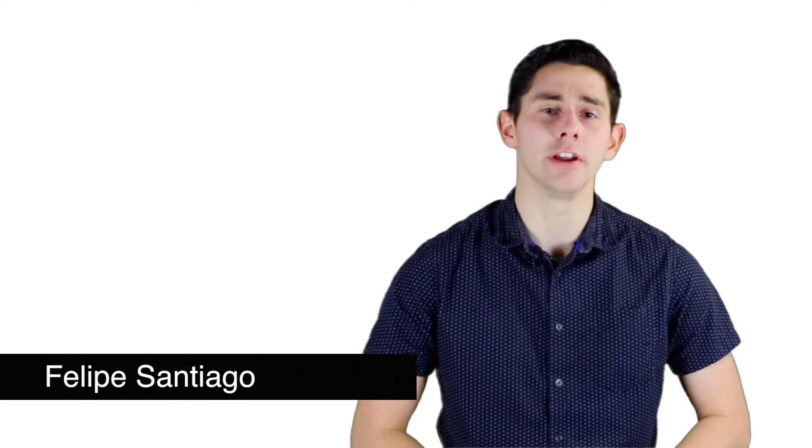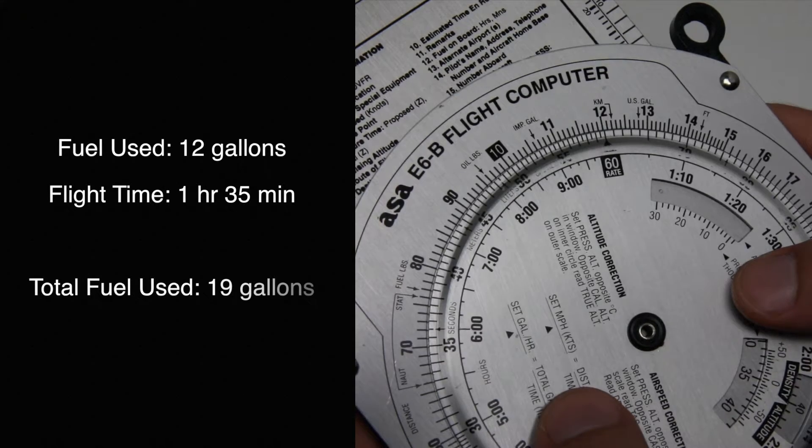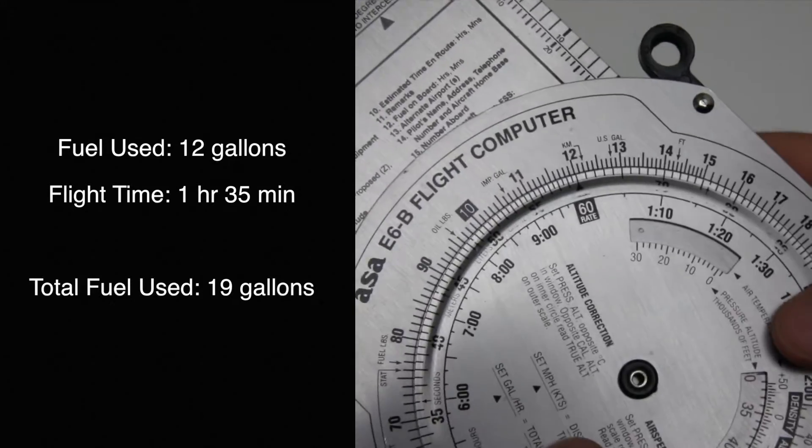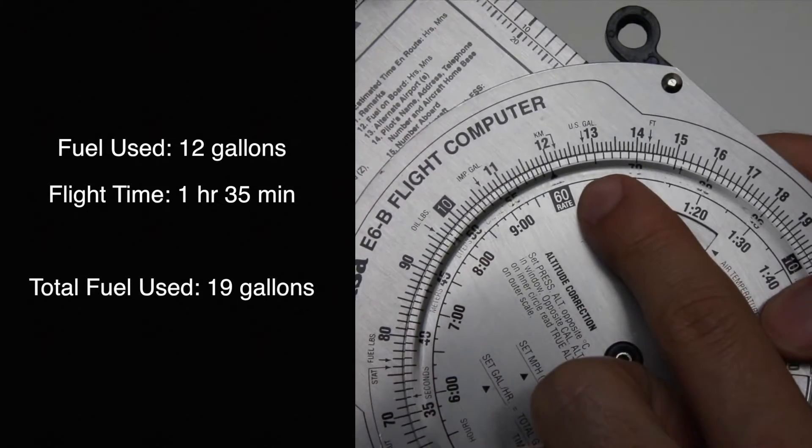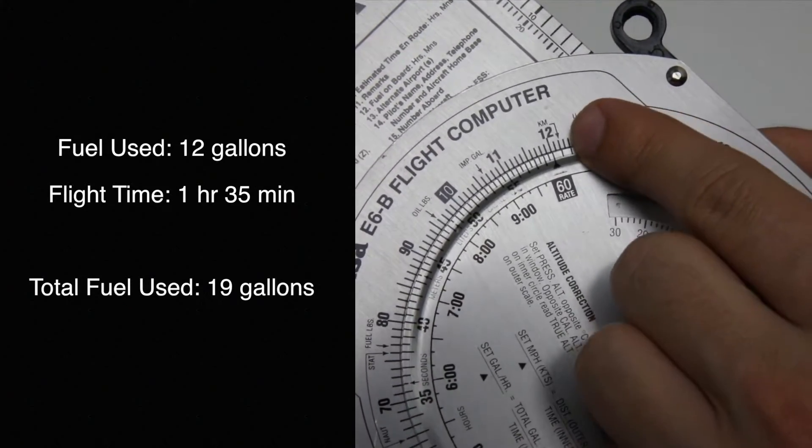Welcome back aviators, let's take a look at our E6B. To calculate gallons burn, we're going to set our fuel consumption per hour, so we have 12 gallons per hour for this example.